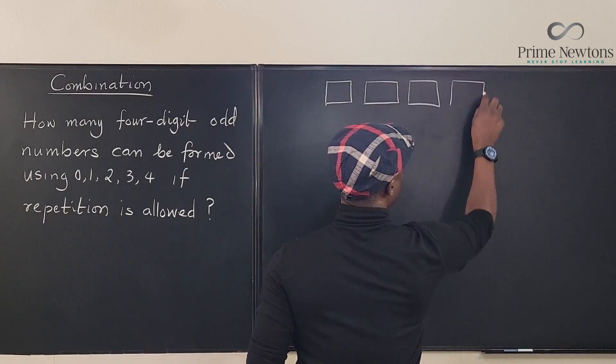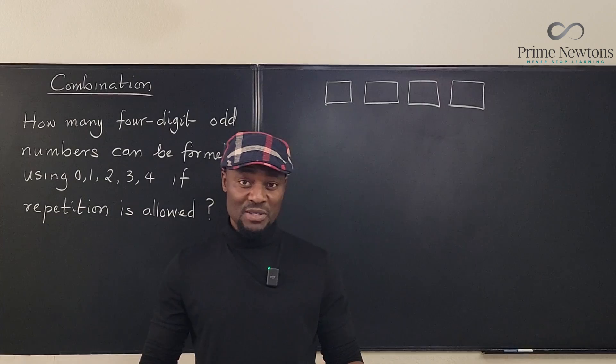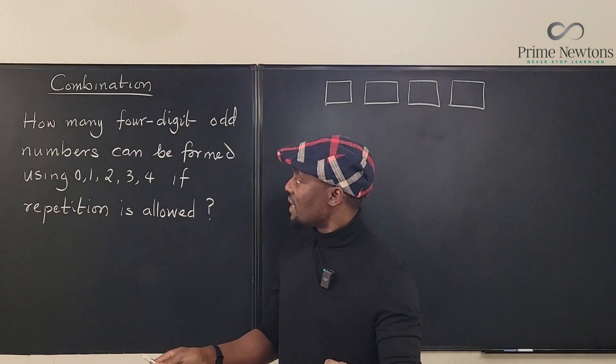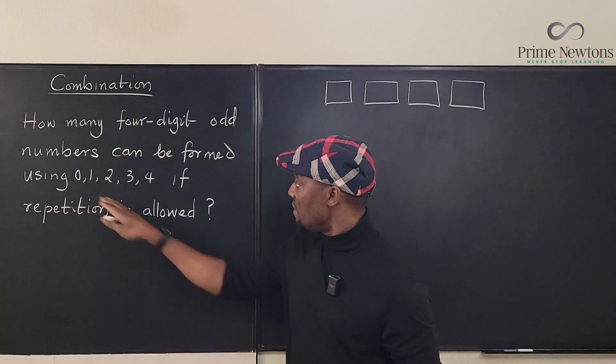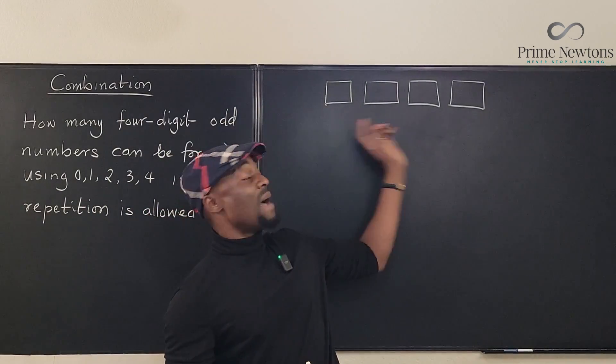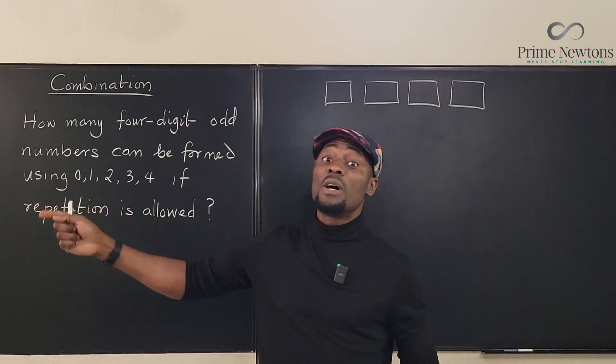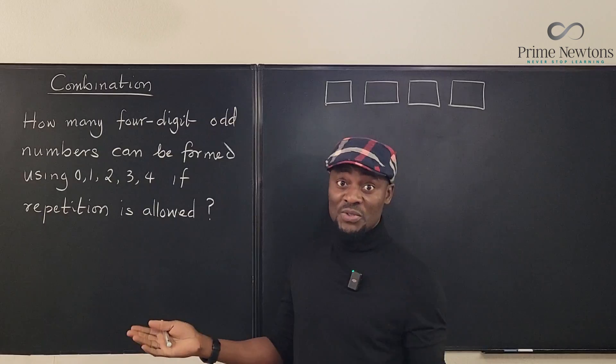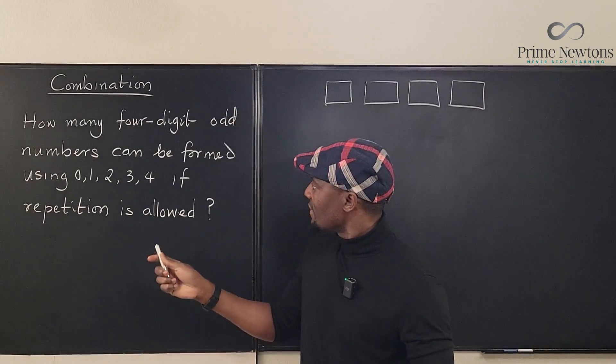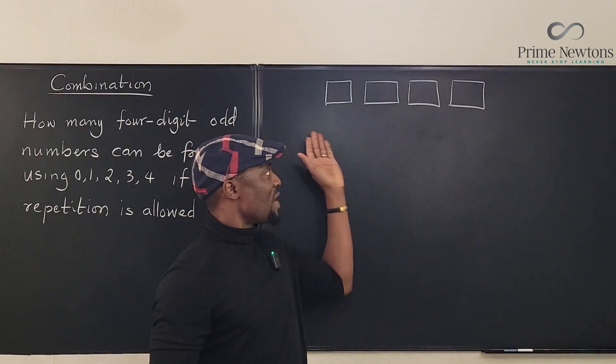But one major characteristic, or two major characteristics are: one, it has to be a four-digit number. You only need a maximum of four of them. You can have 1, 1, 1, 1 or 1, 0, 2, 3, whatever you like. Secondly, it has to be an odd number.